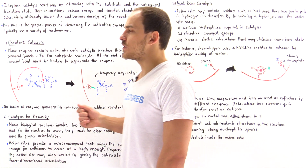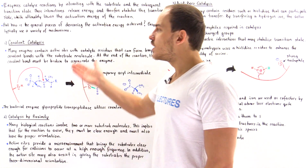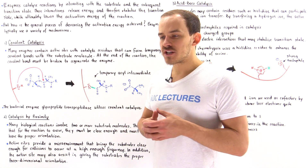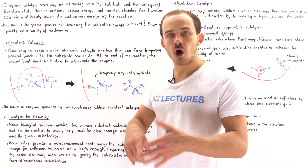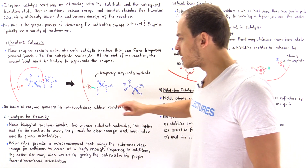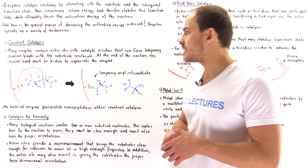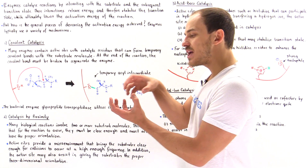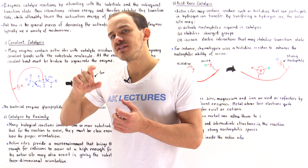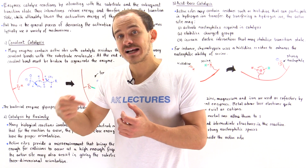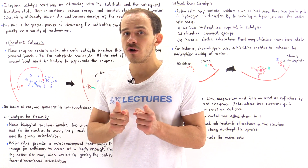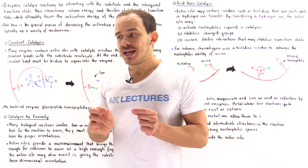Let's begin by focusing on the first one: covalent catalysis. In some enzymes, such as trypsin, chymotrypsin, other digestive enzymes, as well as the enzyme we're going to focus on in this lecture — glycopeptide transpeptidase — inside the active site we have catalytic residues. These amino acids, part of the active site of the enzyme, are responsible for actually forming a temporary covalent bond.